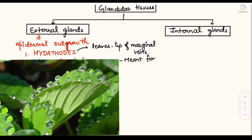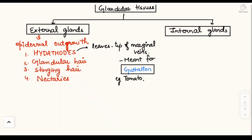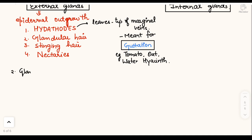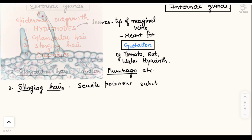In hydathodes, the tips of marginal veins in leaves open to the exterior by pores surrounded by guard cells. Hydathodes are meant for guttation and can be seen in tomato, oats, and water hyacinth. Glandular hair have a stalk and head, and can be seen in tobacco and Plumbago.